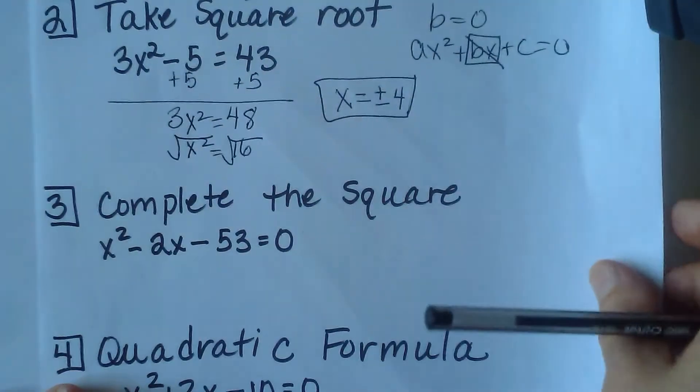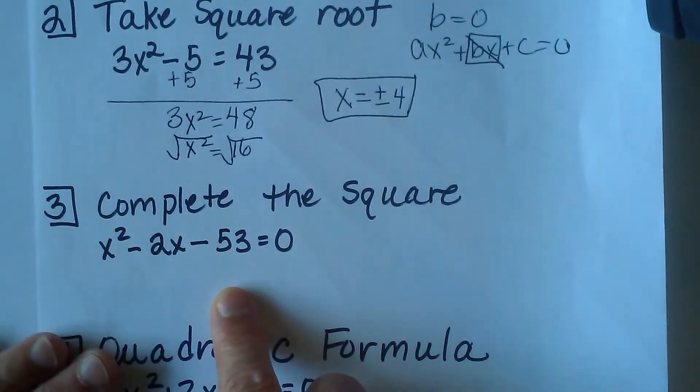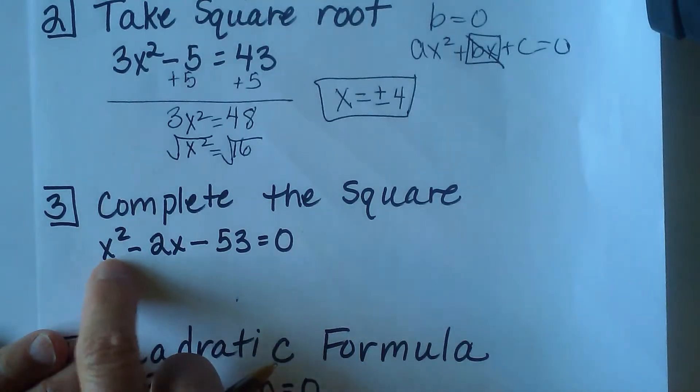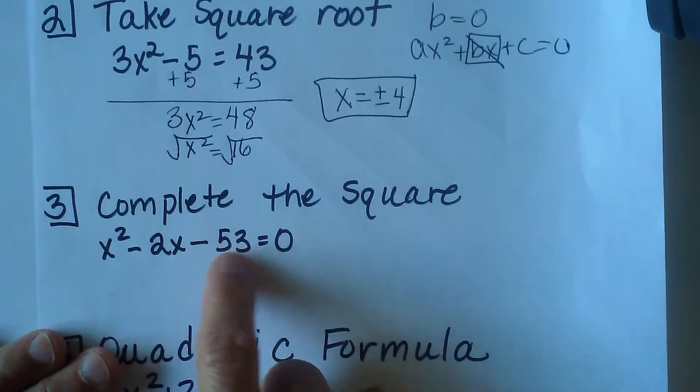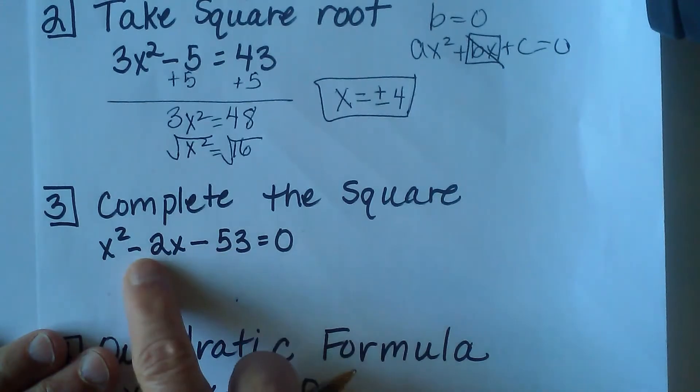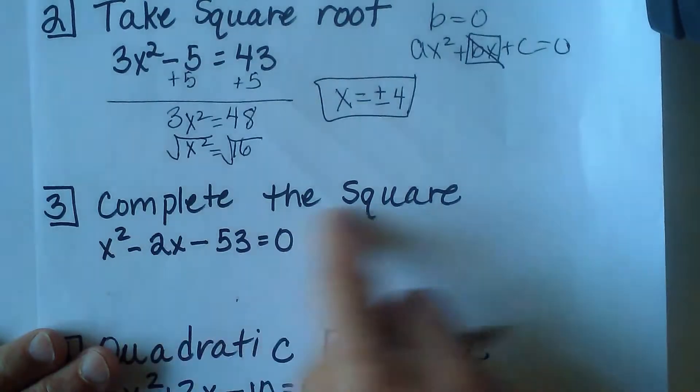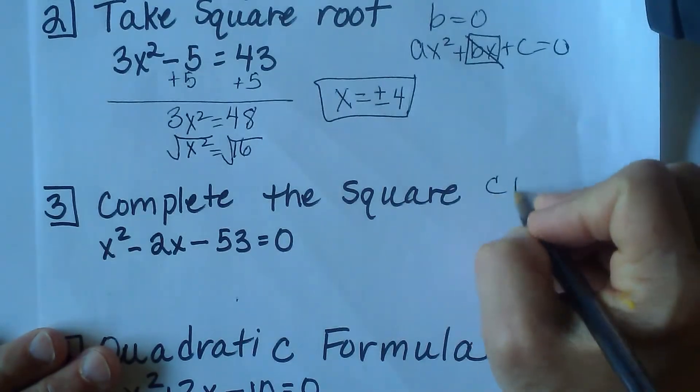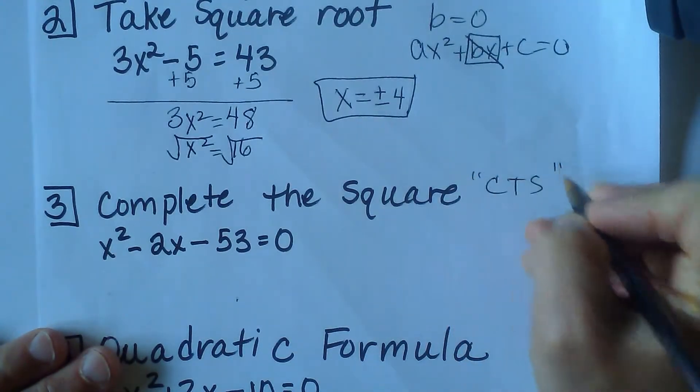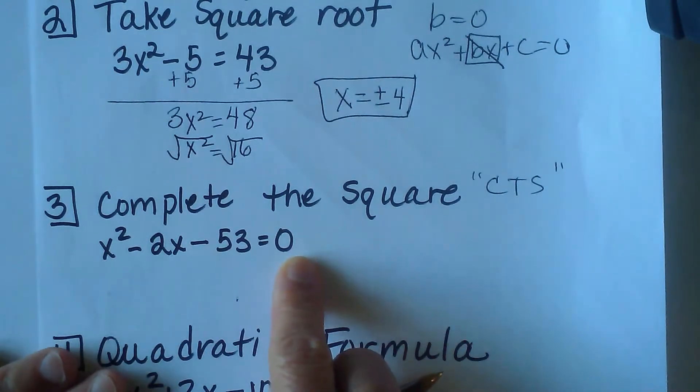Now let's look at completing the square, the third method. You can look at it and say, this one has a lead coefficient of 1, and what multiplies to 53 that has a difference of 2, and there's not any factors. So we're going to use completing the square, also known as CTS. To complete the square, we're going to take the b term.